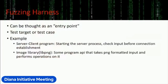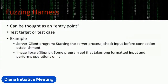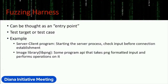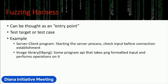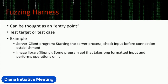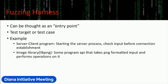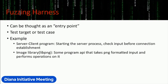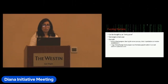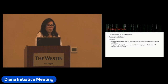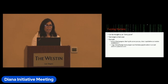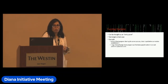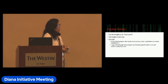One important terminology is the fuzzing harness, which is a very important part of fuzzing — it's called the entry point of your fuzzer, or in layman terms, the test target or test cases. For example, in a server-client program, the harness can be starting the server process or checking input before establishing the connection. For an image-based library like libpng or libjpeg, the harness can be a program API that takes a PNG-formatted input and performs operations on it.